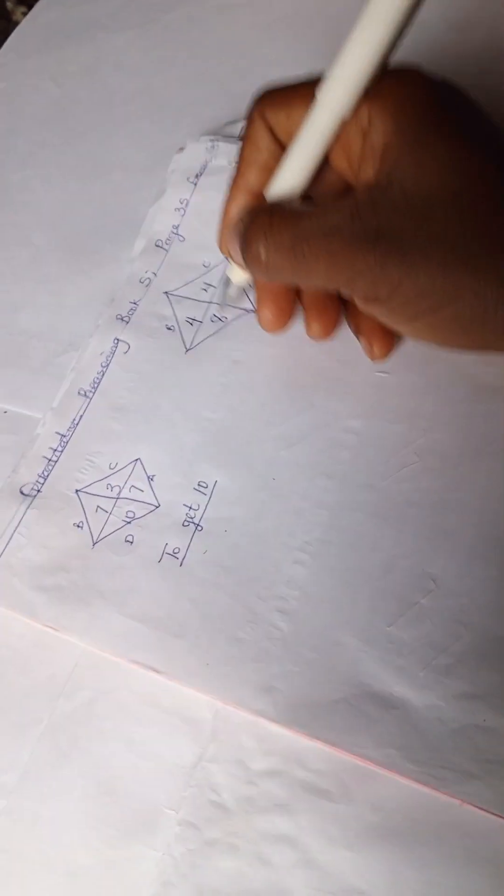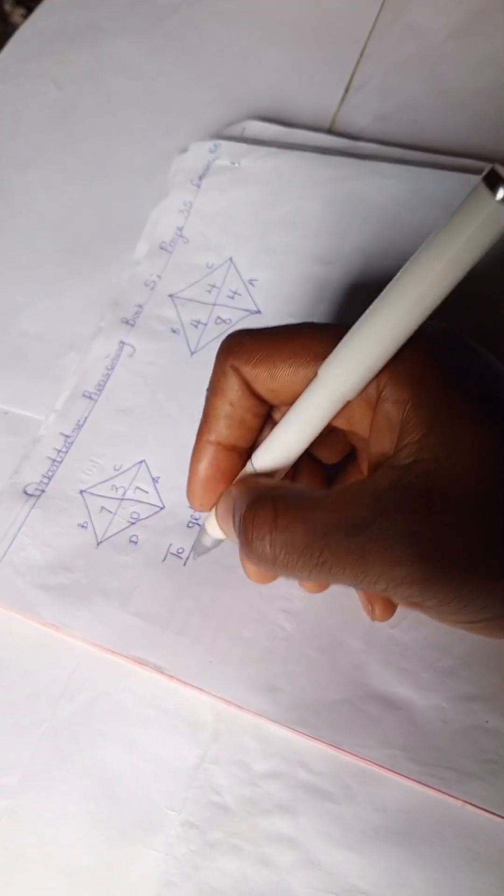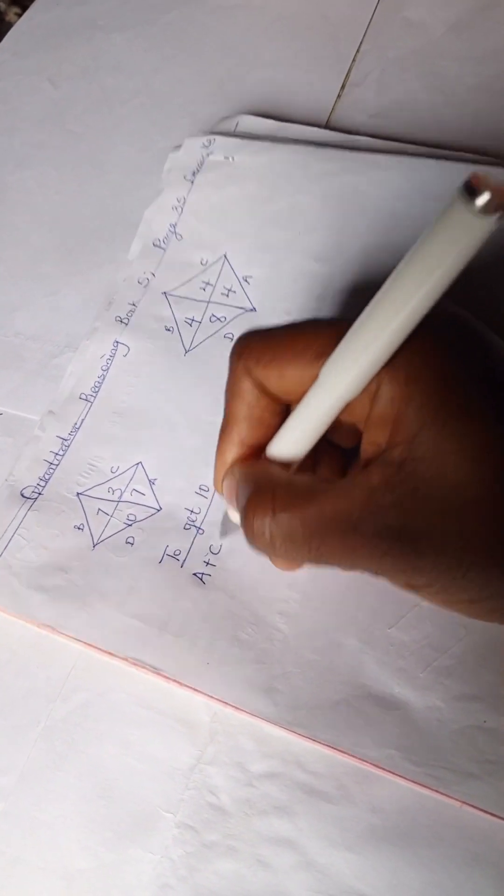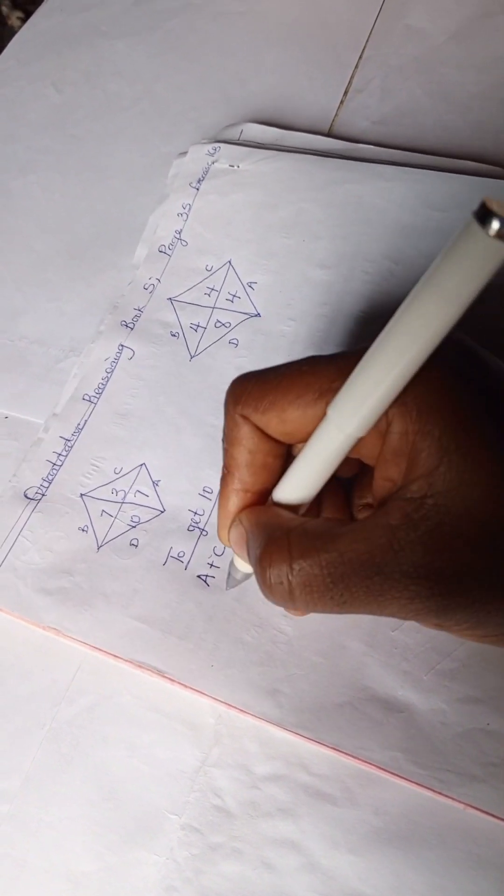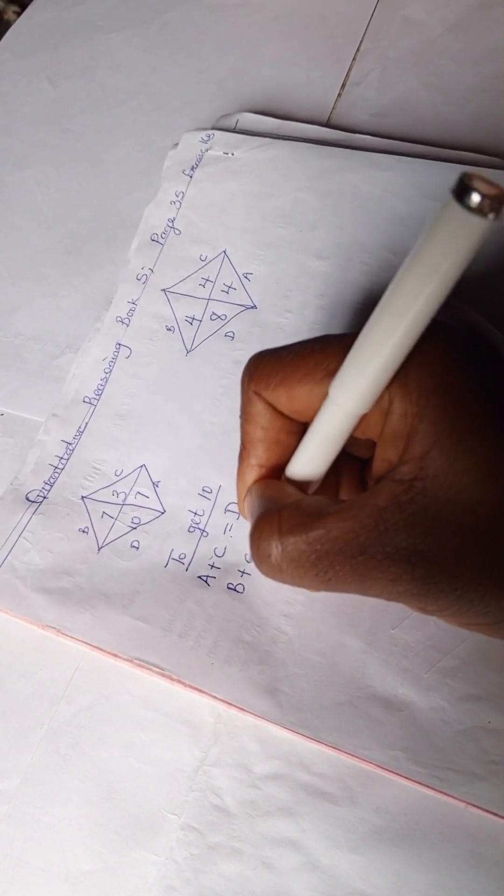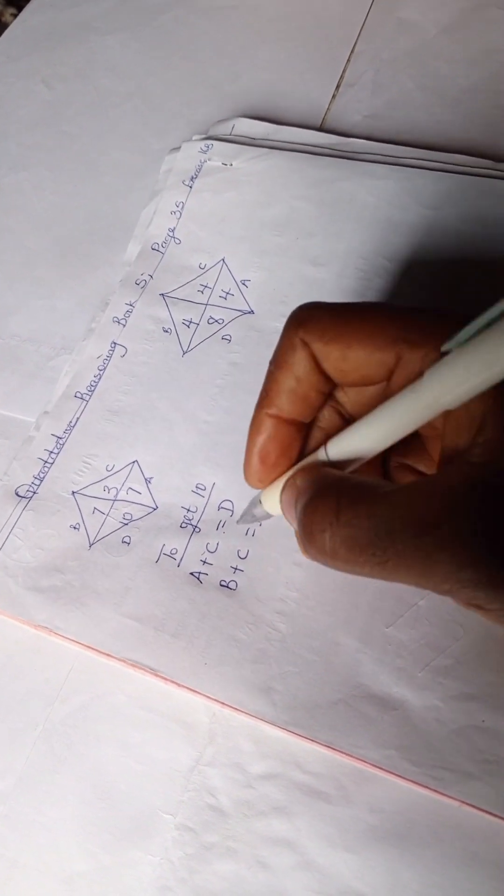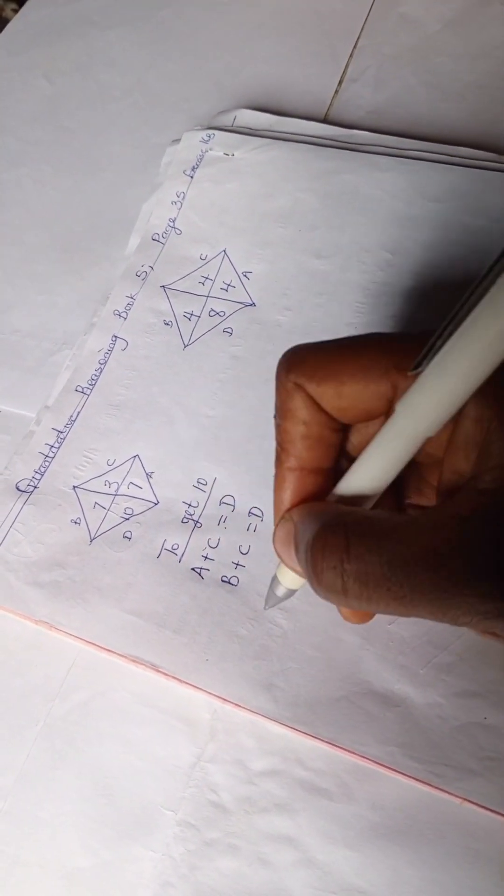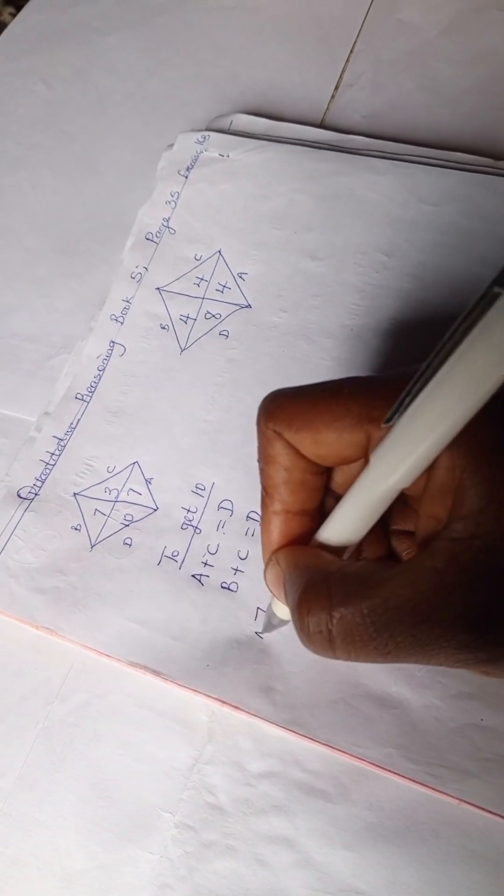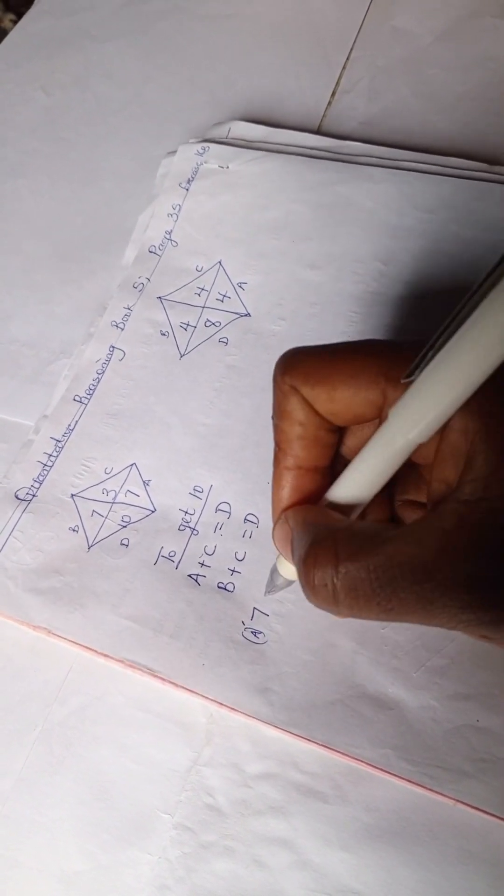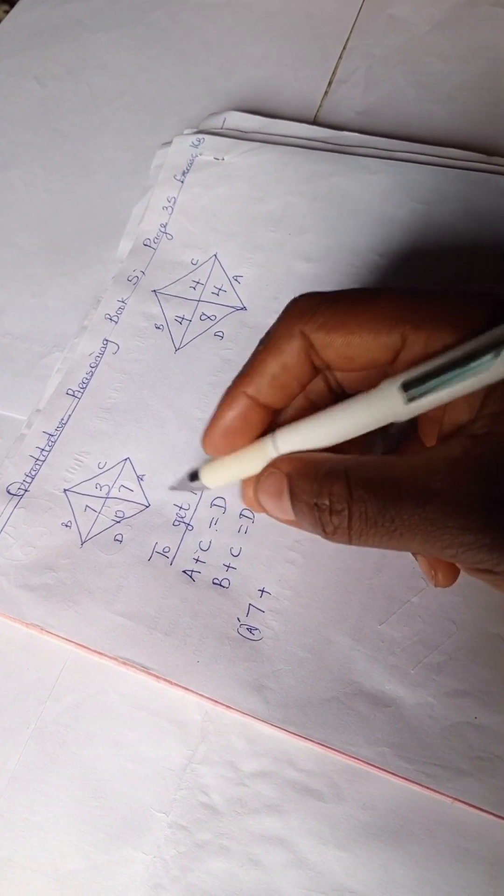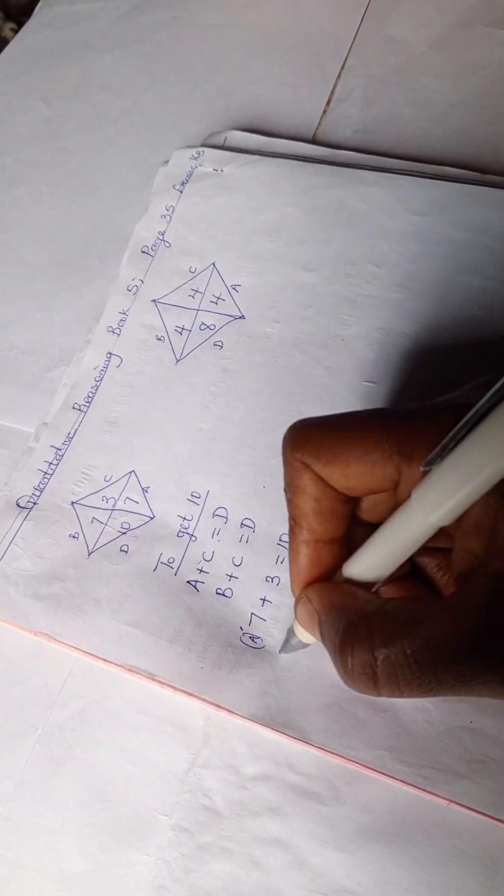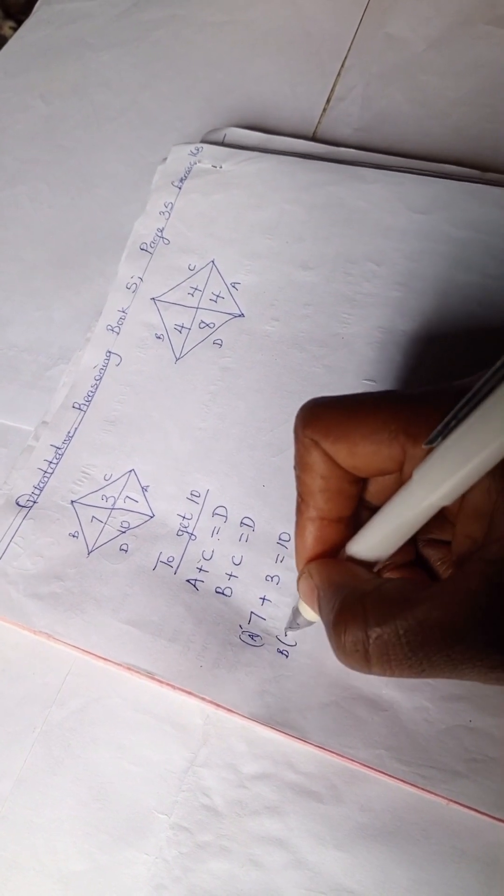So let's go ahead. We have A plus C equals D, and B plus C equals D, right? So we can then say for the first equation we can have seven, which is A, plus C, which is three, equals ten.